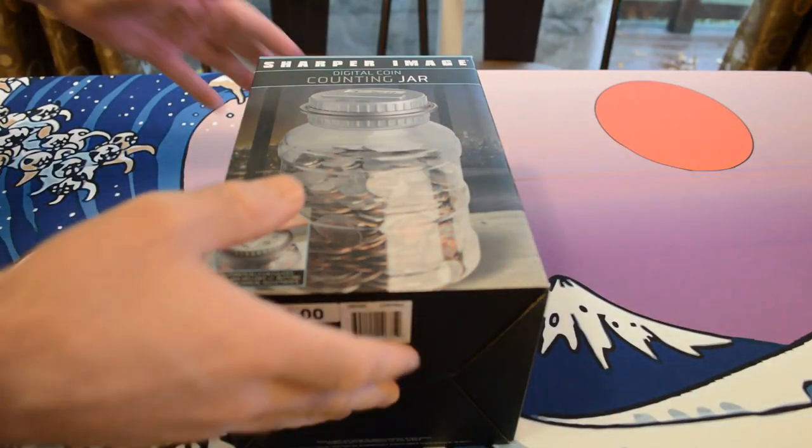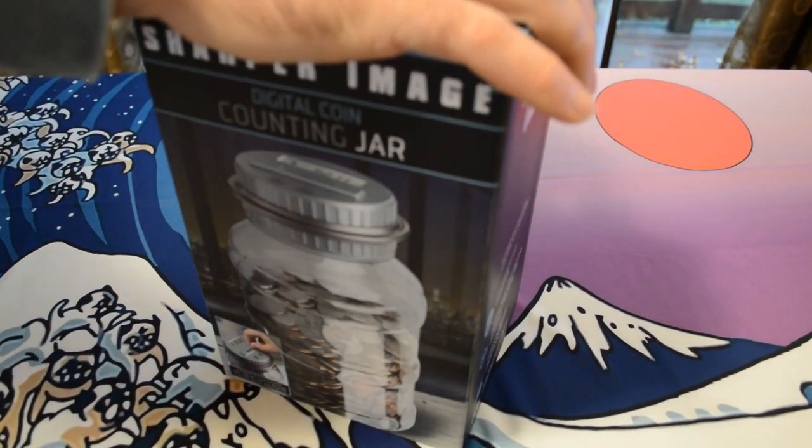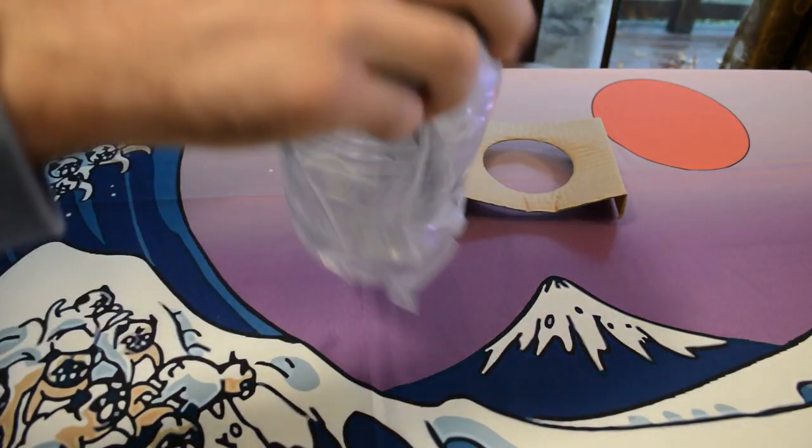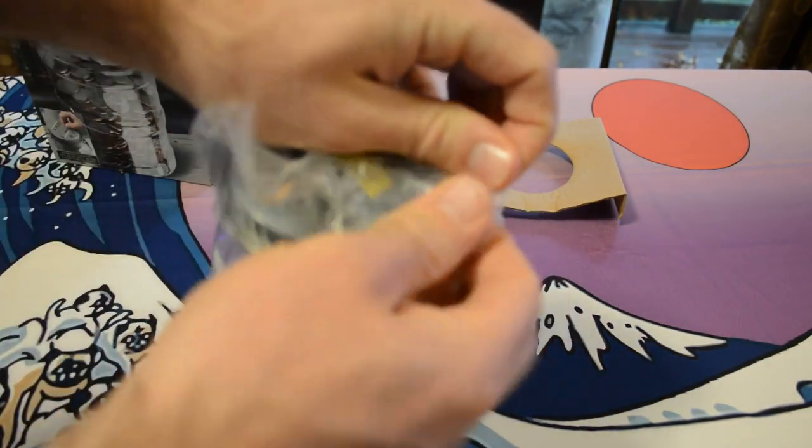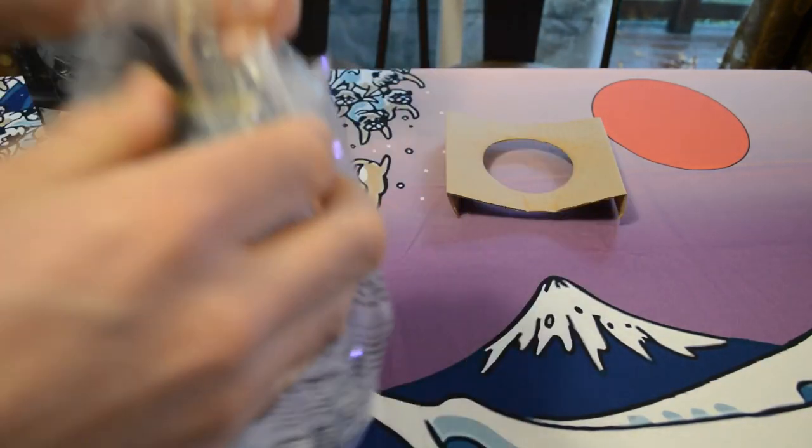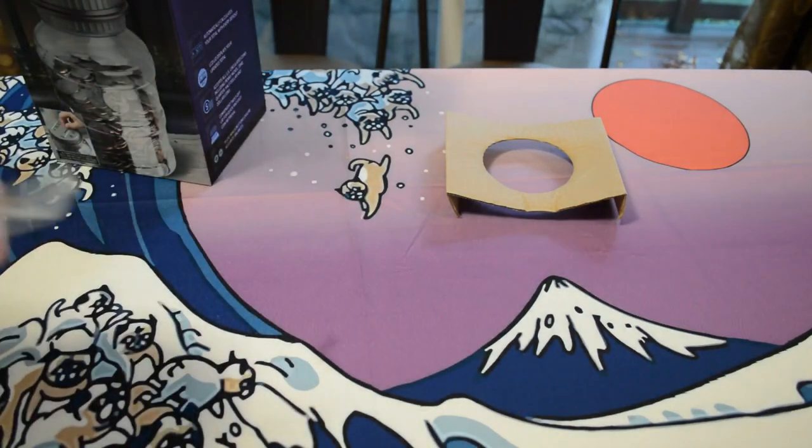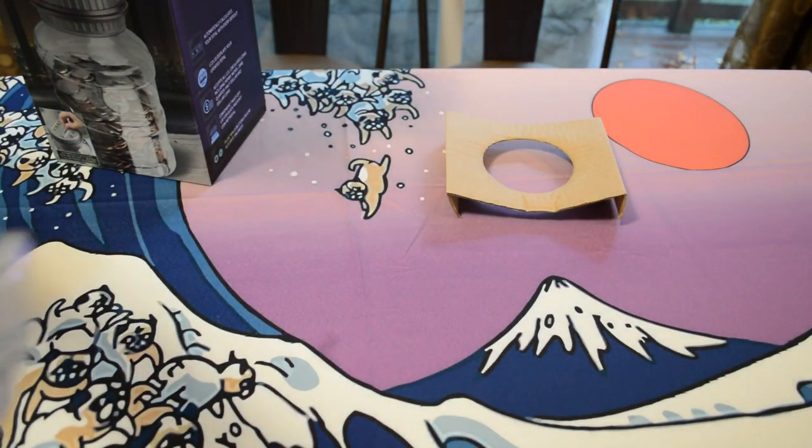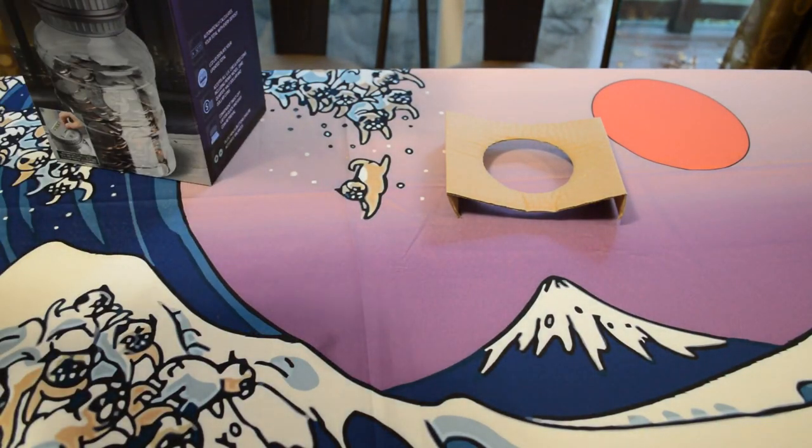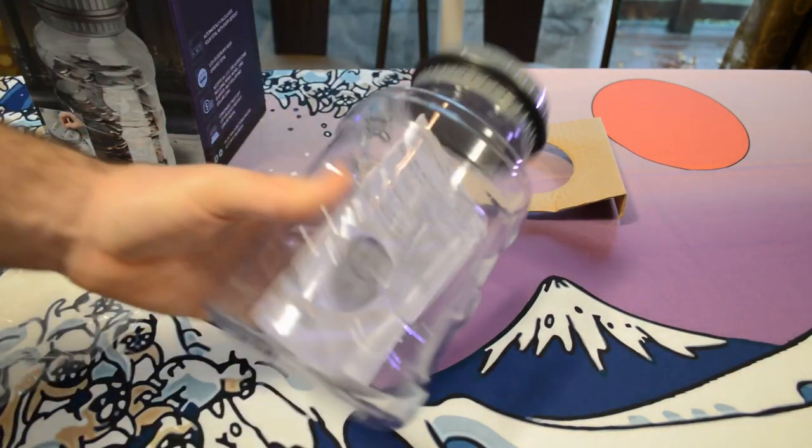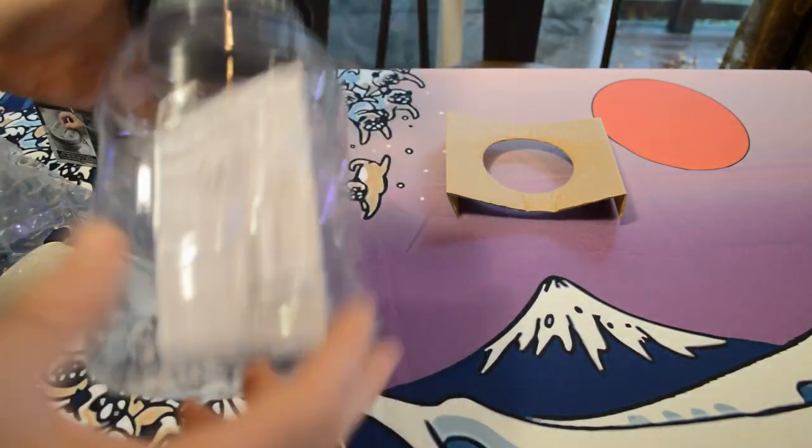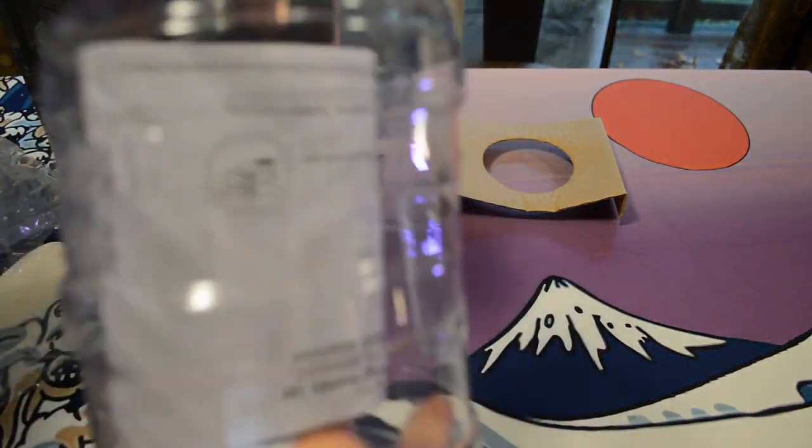Alright, so I'm going to take it out of the box here. Sharper Image, if you don't know, is a huge brand. They have a lot of these types of gadgets. Here it is. So it says jar, and normally when you think jar, you think of something like—at least I do—I think of a mason jar. It's kind of designed like a mason jar, but it's definitely plastic, which may be a good thing actually because you're throwing money into it, so it may last a little bit longer.